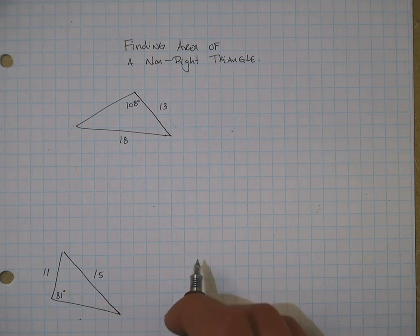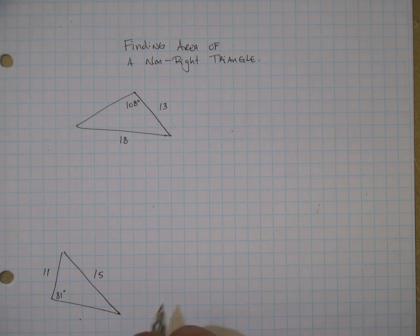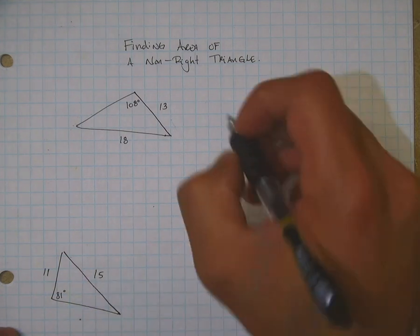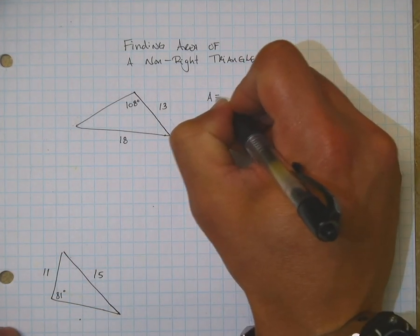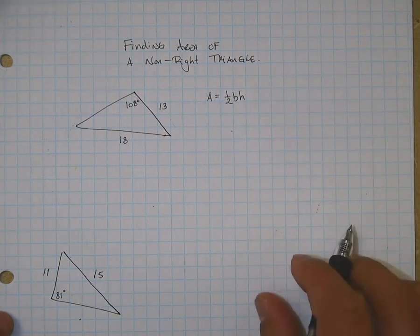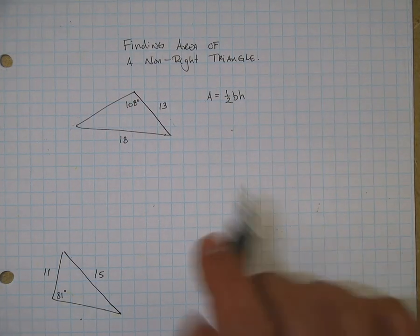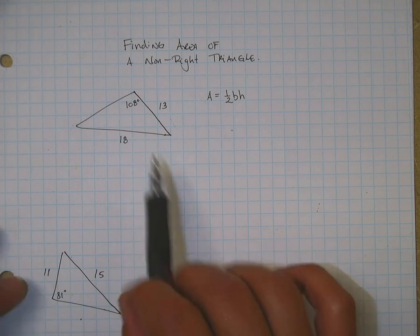Hey guys, I want to go ahead and do an example here, finding the area of a non-right triangle. Now, you guys know that the area of a right triangle is one-half the base times the perpendicular height. Unfortunately, this guy is not a right triangle.